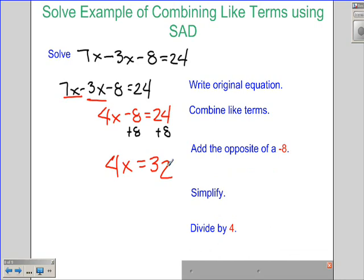I need to simplify which I have there. Now I need to divide by 4 because this is 4 times x. So I'm going to divide both sides by 4, and that leaves me with x equals 32 divided by 4 is 8. So my answer is x equals 8.